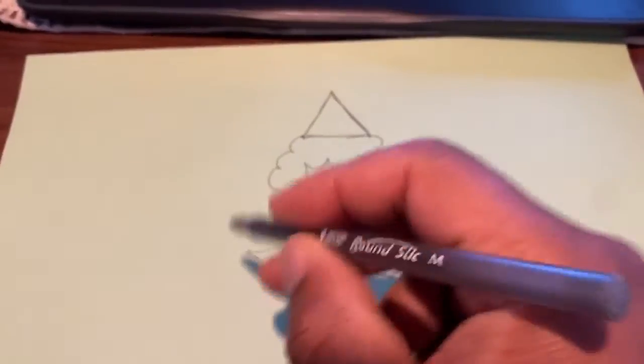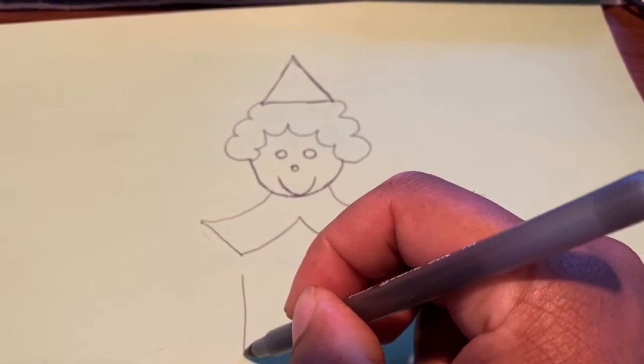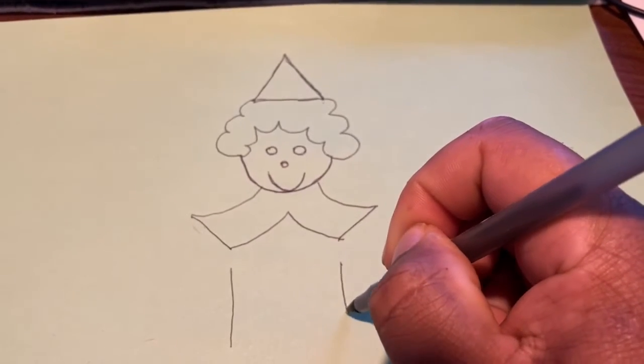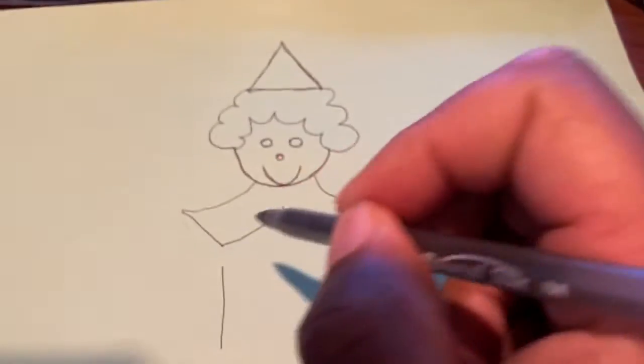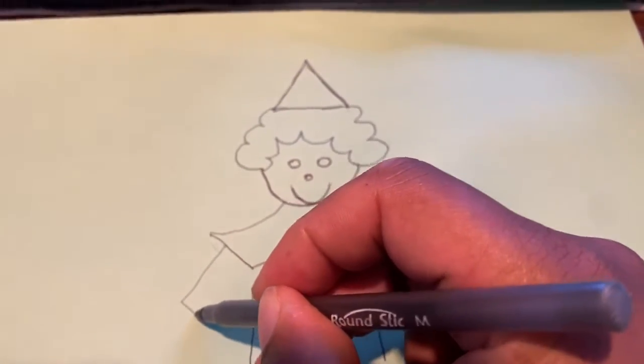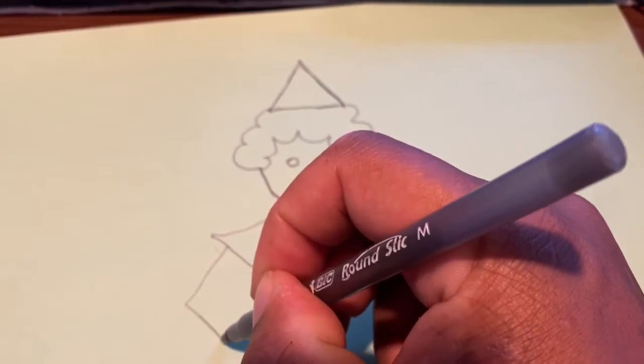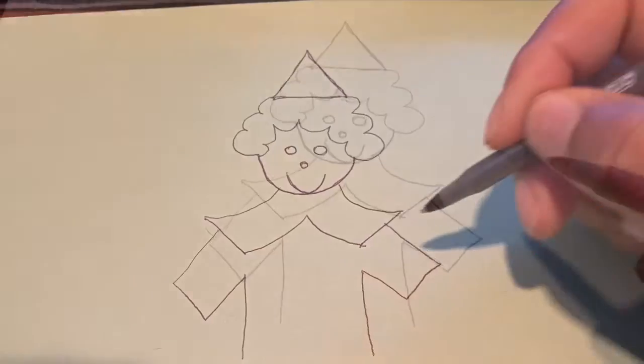Next, we're going to do his shirt, and we'll just use a square shape for the shirt. Don't close this in just yet, and then we'll do a sideways square here for his sleeve, and a sideways square here for the sleeve.